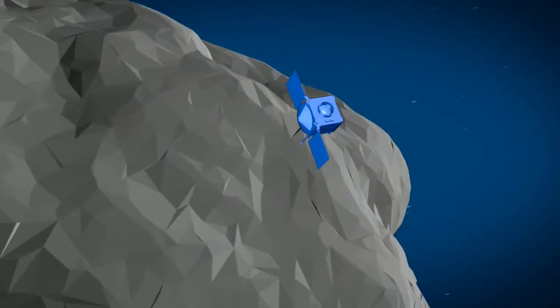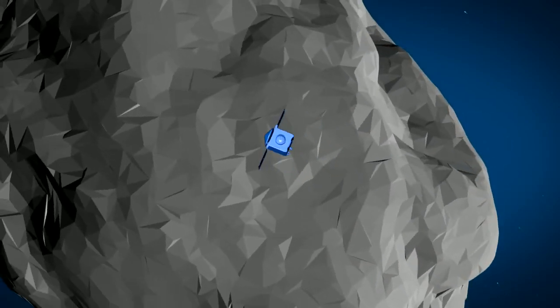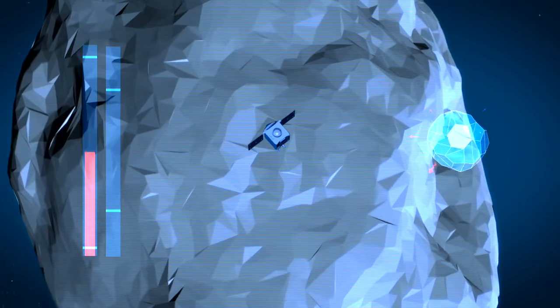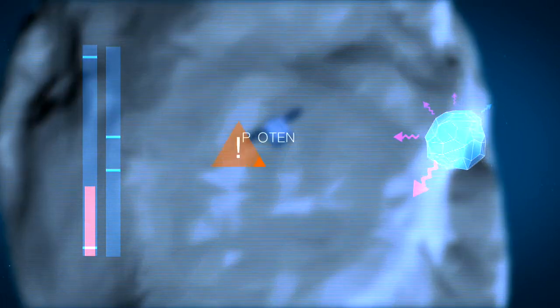By studying the Yarkovsky effect on Bennu with the OSIRIS-REx spacecraft, NASA scientists hope to better predict how an asteroid might move through the solar system, and whether it poses any danger to us here on Earth.